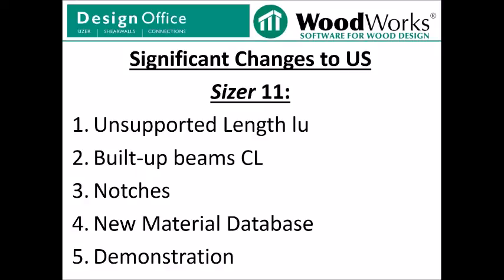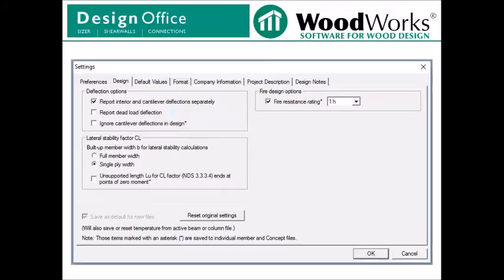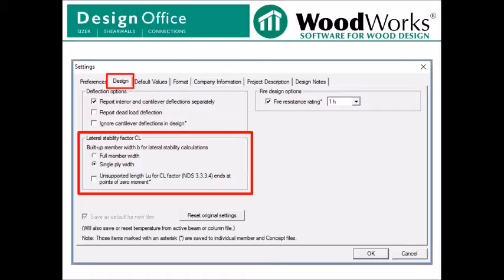Quick outline of this presentation. Start by going over features related to calculating unsupported length LU. We'll discuss new features related to calculating CL for built-up beams, look at new features related to notches, new material databases, and then finally, a demonstration of new features. So we'll start off by discussing some design settings. If you click the Settings button in the main menu screen and then navigate to the Design tab, you'll see there is a section devoted to lateral stability factor CL, which we'll discuss further now.